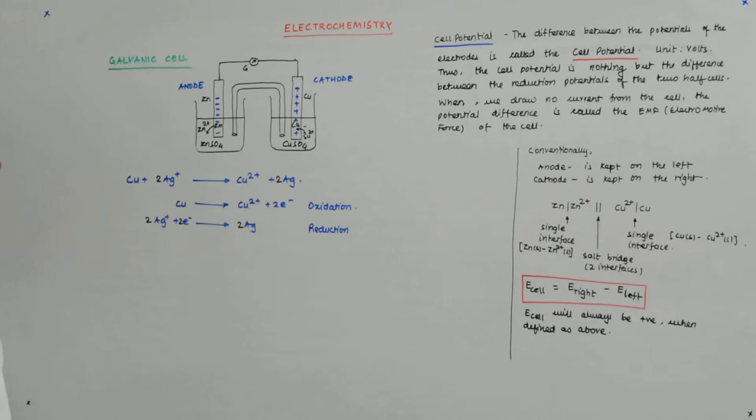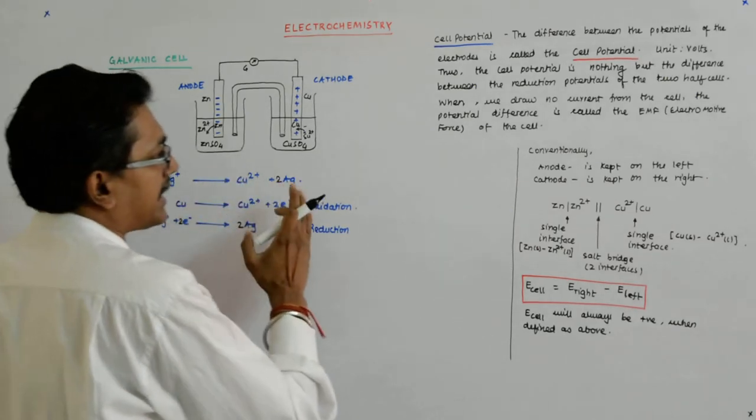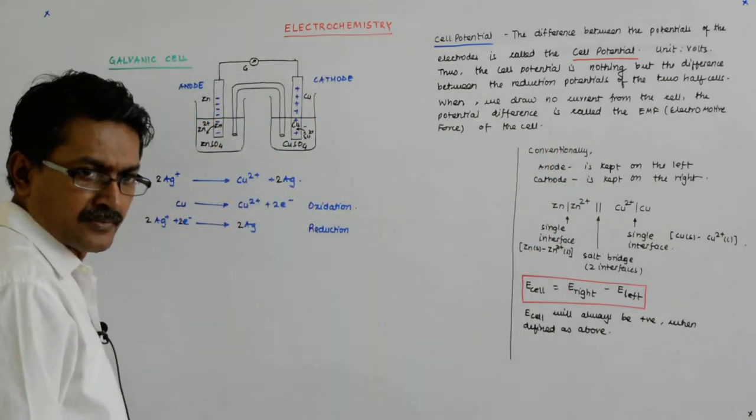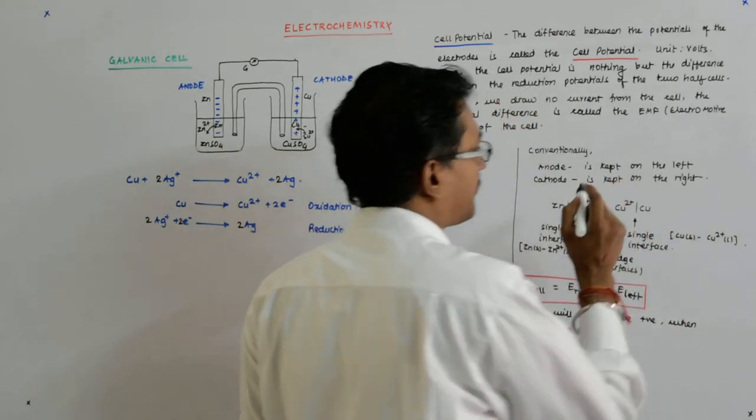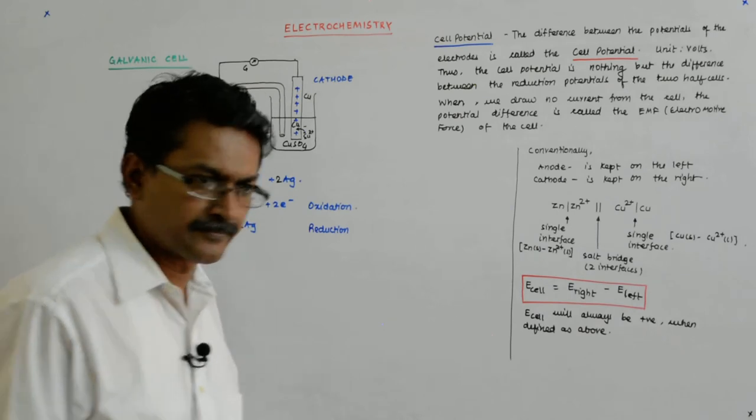This is how you write the reaction. We said that we keep the anode always to the left. Wherever the oxidation is taking place has to be kept to the left.